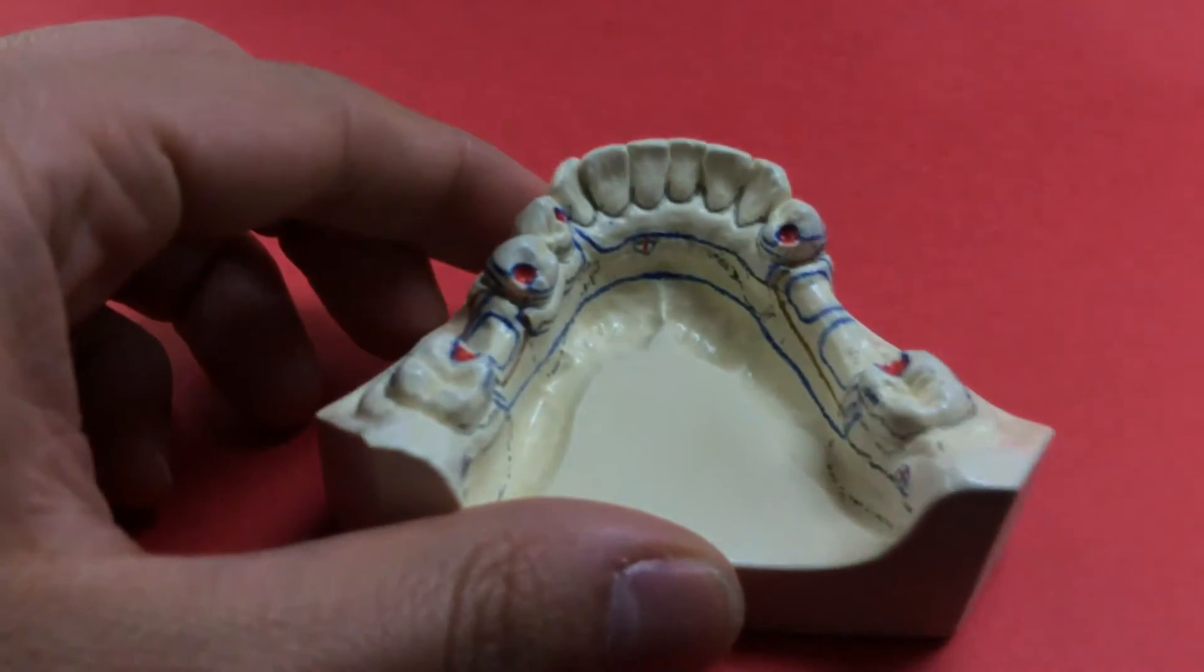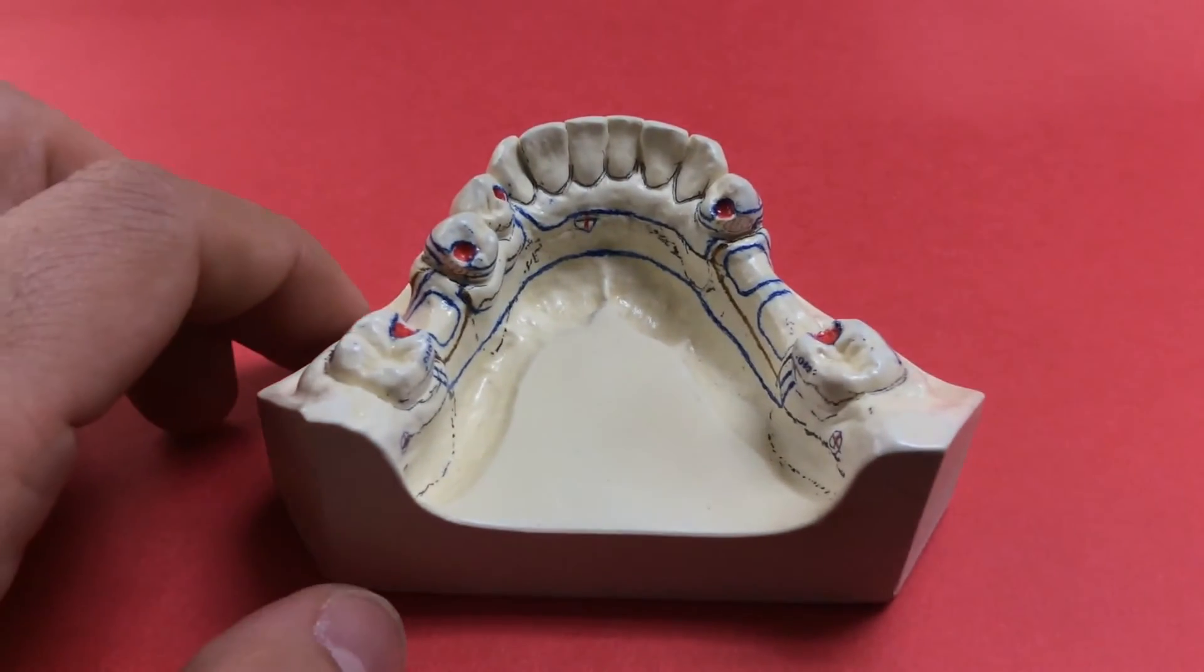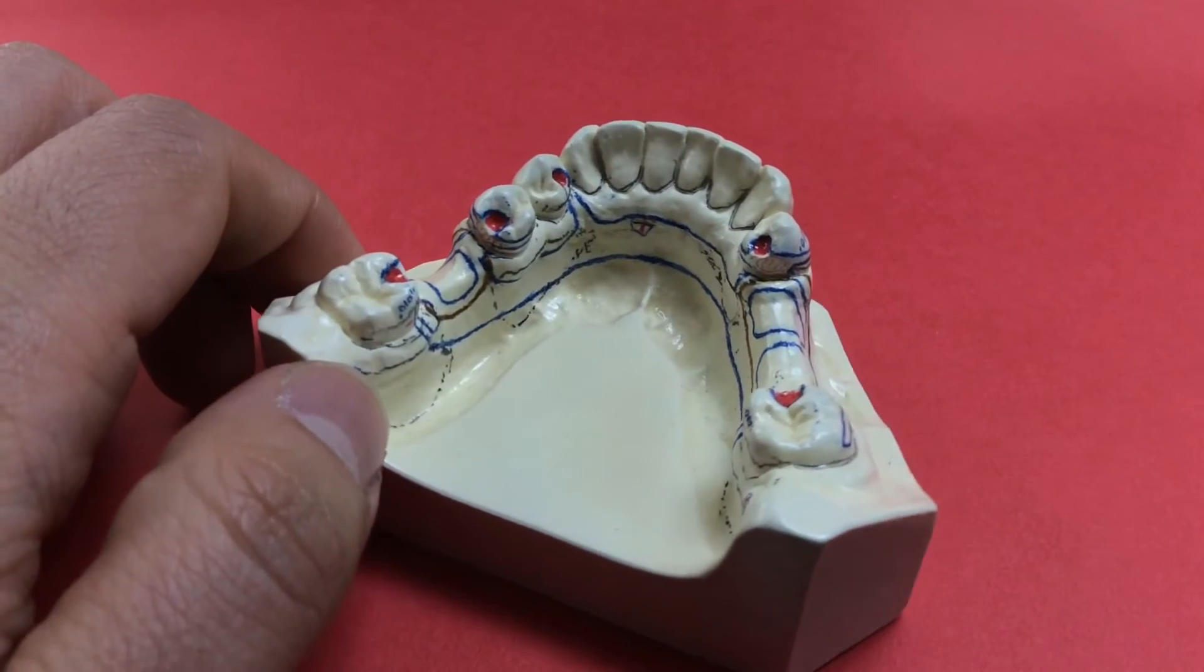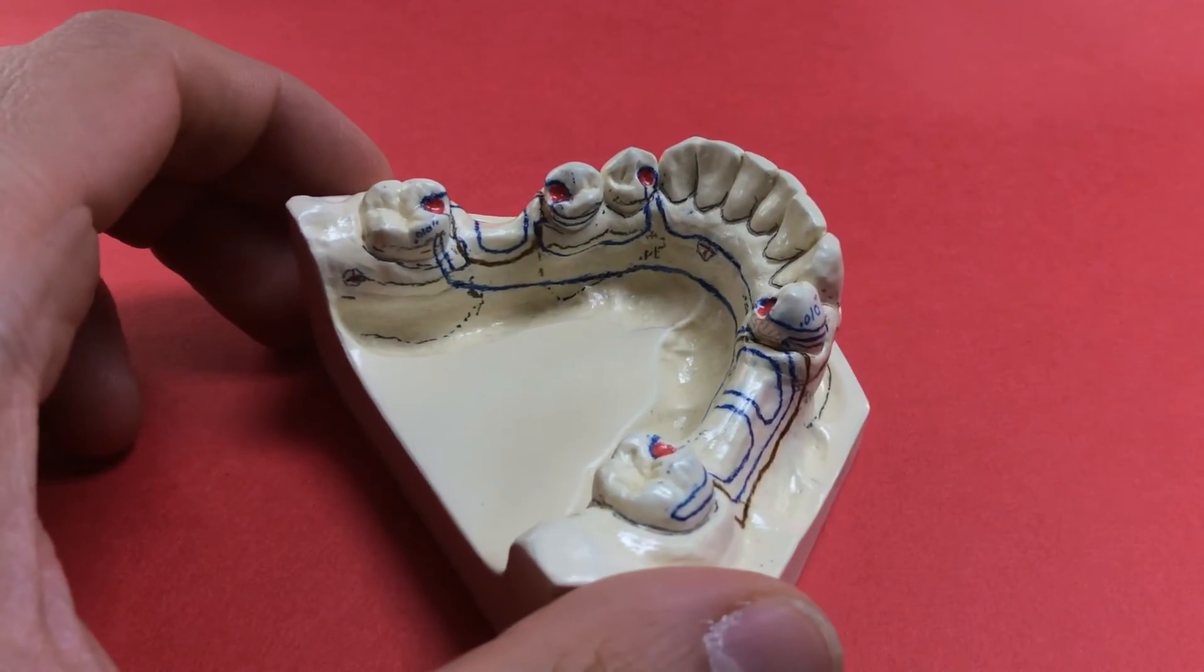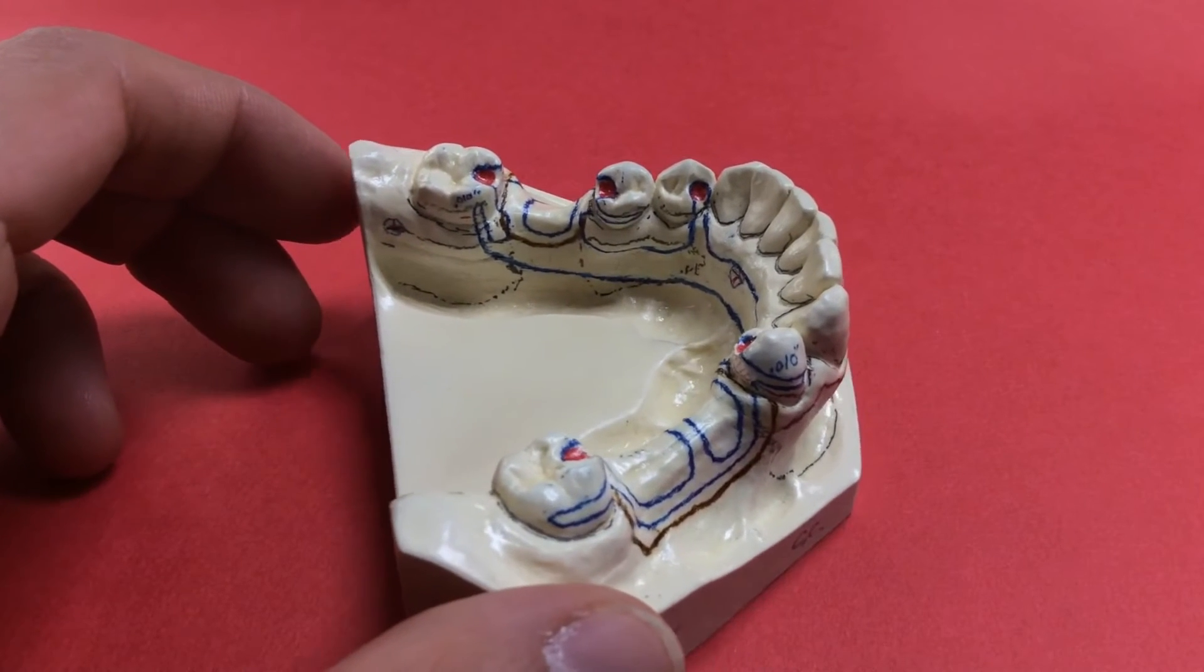So because they're canines, you're going to use I-bars, because they're going to be more aesthetic, because they're infra-bulged, so they're going to approach from the tissue and not show as much.